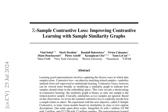The authors introduce a novel approach to contrastive learning, dubbed X-Sample Contrastive, which addresses the limitation of traditional contrastive losses that only consider a single positive sample and ignore similarities across samples. Standard contrastive loss can be viewed as modifying a binary similarity graph, neglecting the valuable information contained in similarities across samples.